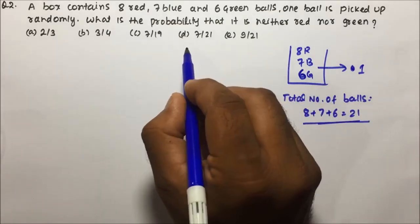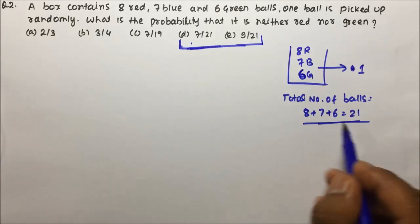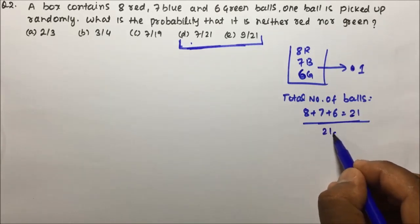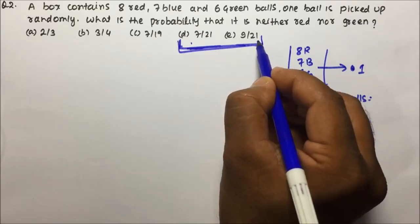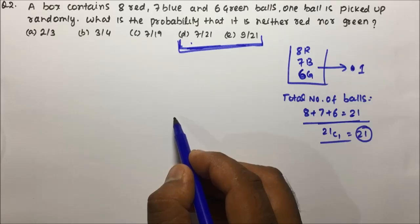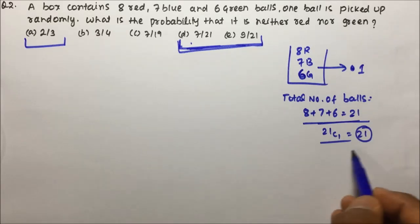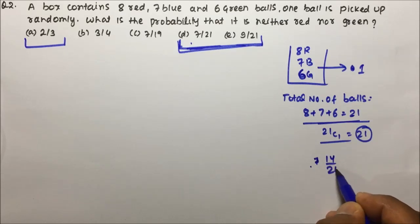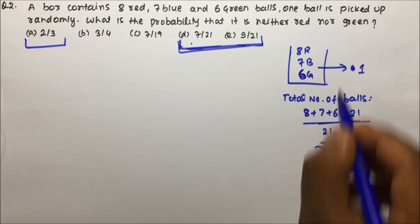By seeing the options only you can say either D or E will be the answer because we are going to draw only 1 ball. So 21C1 will be nothing but equal to 21. So if you have to guess also, please guess option D or E. Now see, even option A can also be the answer in one case, when you are getting 14 and then 21, then you can say it will be 2 by 3. But this will not be possible because you are going to draw only 1 ball, so numerator also will not be equal to 40.